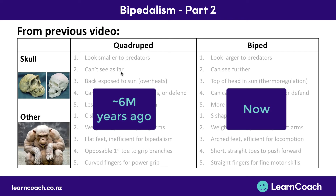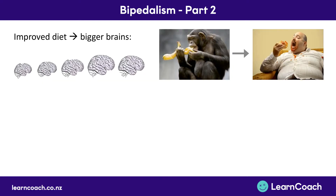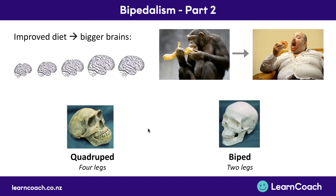Most importantly, the changes to the skull — and we're also going to mention a couple of other changes which are good to know about. Before we delve into the details of the skull changes, remember that an improved diet over time led to bigger brains, and our skull needed to adjust to account for this. But not just for the bigger brain — also because of the food. So let's look at an older skull from a quadruped and compare that to our bipedal skulls right now.